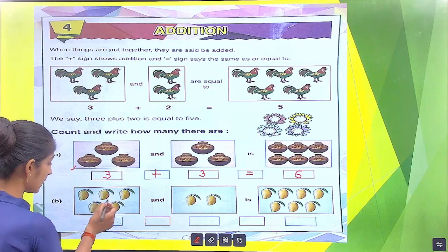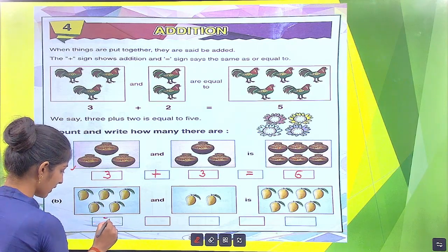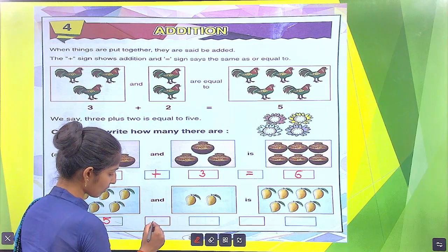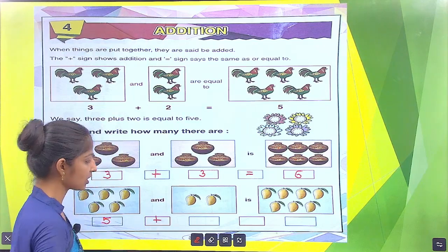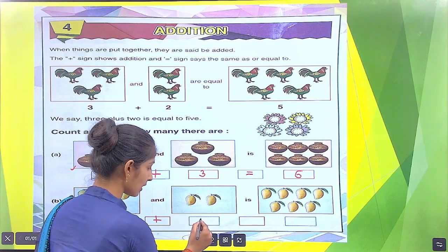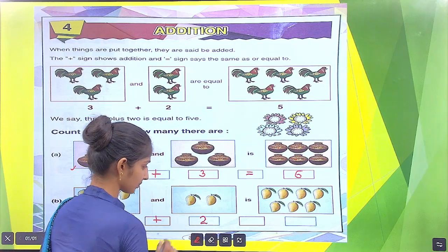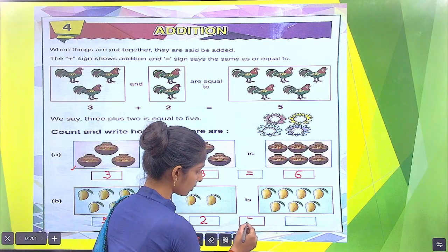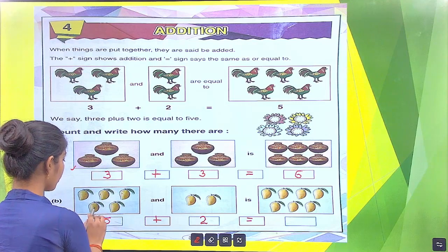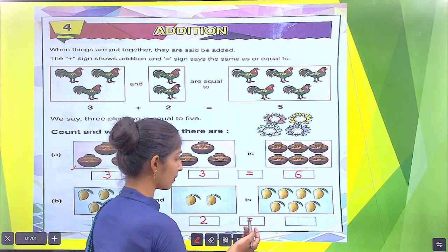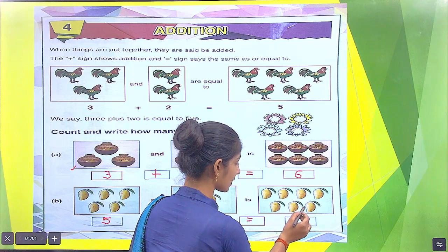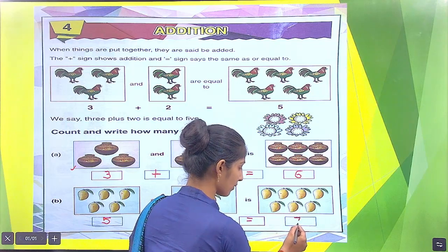How many mangoes? In the first box, there are 5: 1, 2, 3, 4, 5. We put here 5, and here we put the symbol of addition. In the next box, there are 2 mangoes: 1, 2. We put here 2. Is equal to how many total mangoes? We count 1, 2, 3, 4, 5, 6, 7. Is equal to 7. We put here 7.